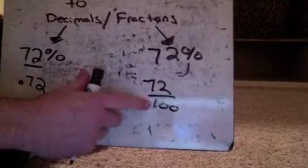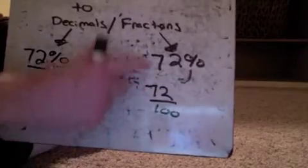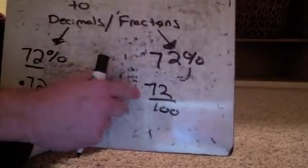We tried to make the bottom number 100, then the top was the percentage. So in this case, 72 out of 100 would be 72%. And it works the other way.